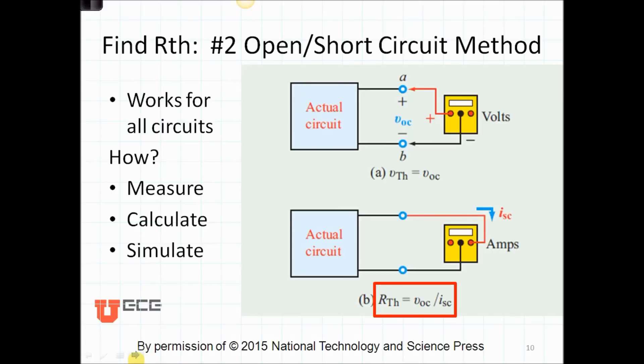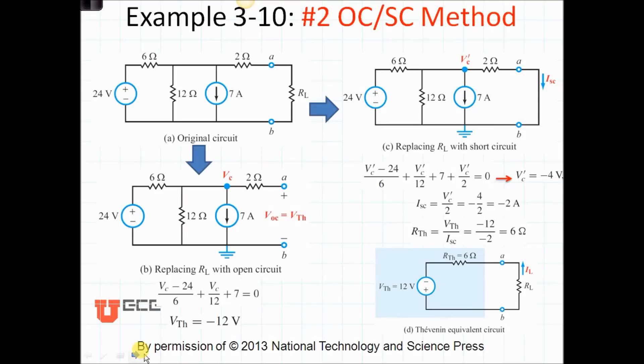Now here's the second way to do this. Let's use the open circuit short circuit method. We have already opened the circuit in order to find VOC, and so that's the VOC. Then we can short circuit the load and measure the current. In that case, our RThevenin is equal to VOC divided by ISC. Again, we can measure, calculate, or simulate this. Let's calculate it.